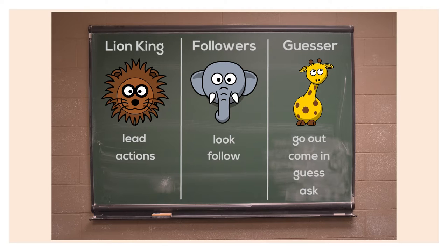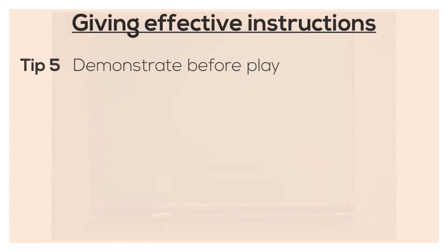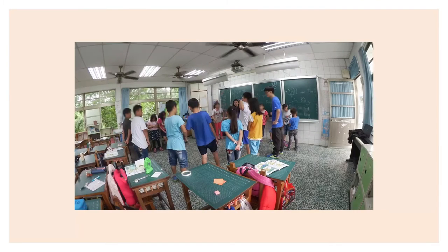Then teach each of these words and demonstrate using body language what each keyword means, thereby teaching students what the three roles are expected to do. That leads us to tip number five: always demonstrate before you let your students participate. Even though the students in the clip tried to demonstrate, their students weren't paying attention. Why? Because students already formed a circle, so to them the game had already started. It's not teaching time anymore, and so of course they would lose focus.